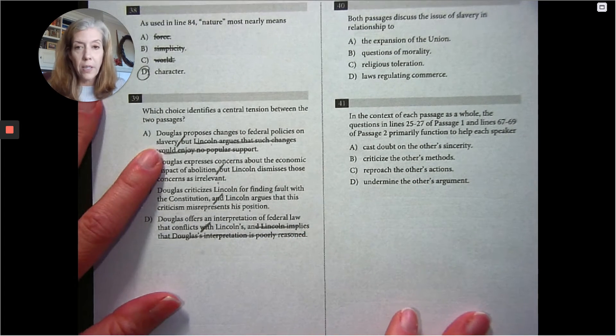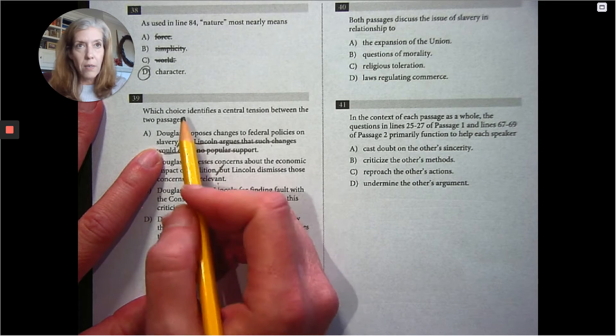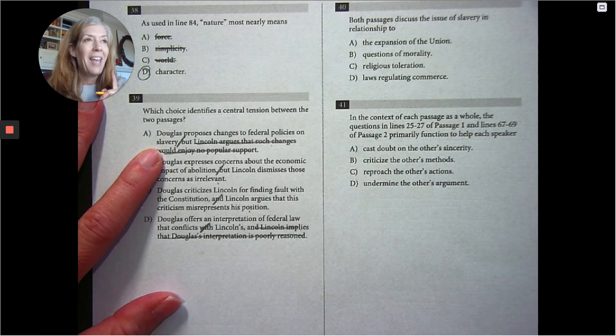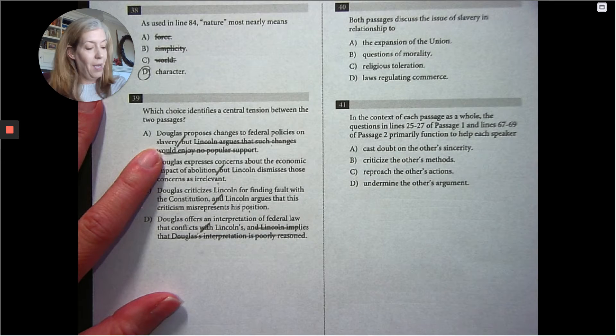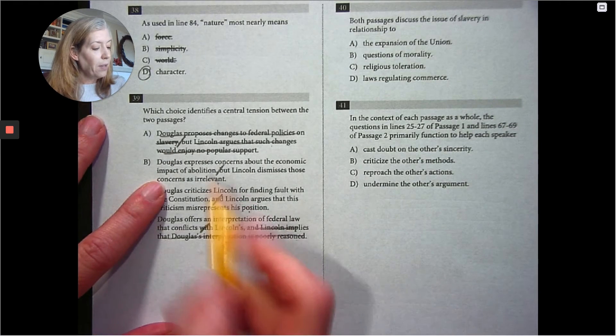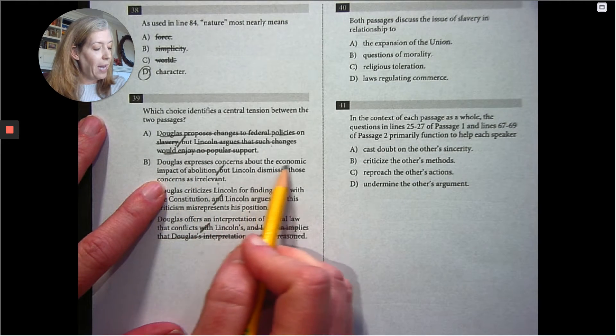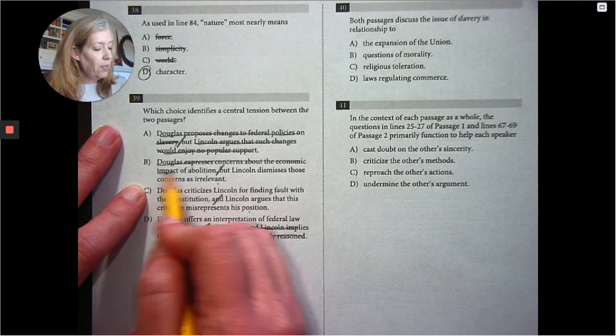All right. Now let's go with Douglas. Which one does Douglas believe? Douglas proposes changes to, no, he doesn't, no, that's true, no. Douglas says that the founding fathers wrote this perfectly. So he is not proposing any changes to anything. Douglas expresses concern about economic impact of that. That's not, just not true. Just not true.